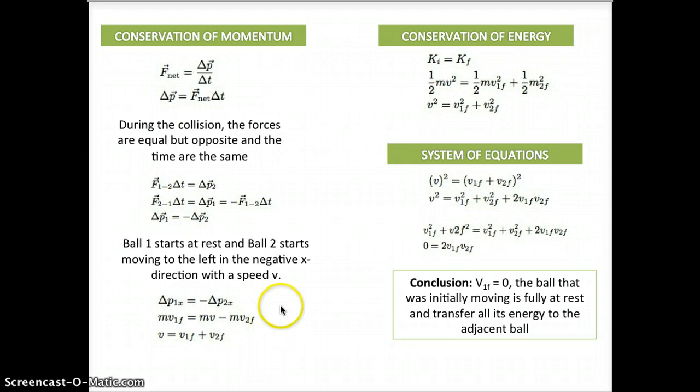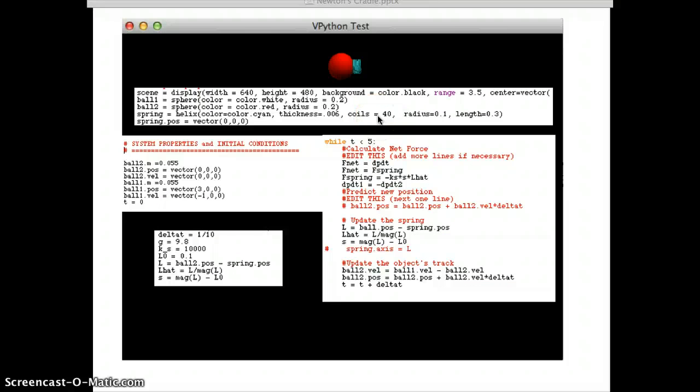To solve for these velocities, we need to bring in another equation using the law of conservation of energy. Given that the kinetic energy before and after the collision is constant, aka that this is an elastic collision, the initial kinetic energy is equal to the final kinetic energy. Using this, we can solve for the final velocity of the two balls through a system of equations. We'd essentially square this equation and set it equal to that that would be derived from the conservation of energy. And so conclusively, we end up that v1f, the final velocity of the first ball following the collision, ends at rest and transfers all of its energy to the adjacent ball. Now we can use this information to construct our computer model.